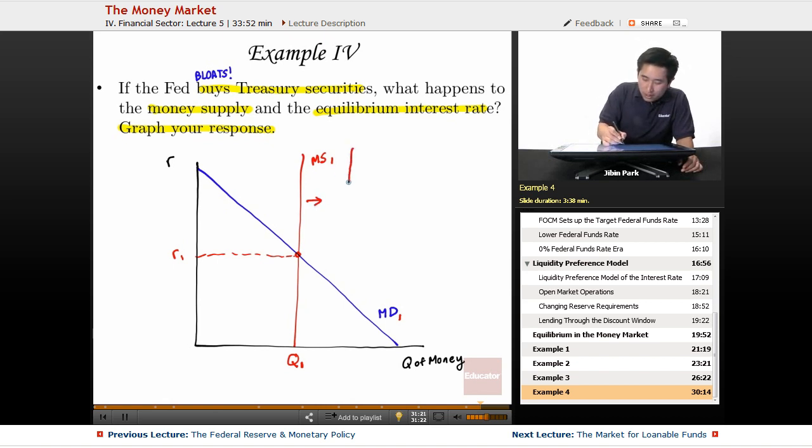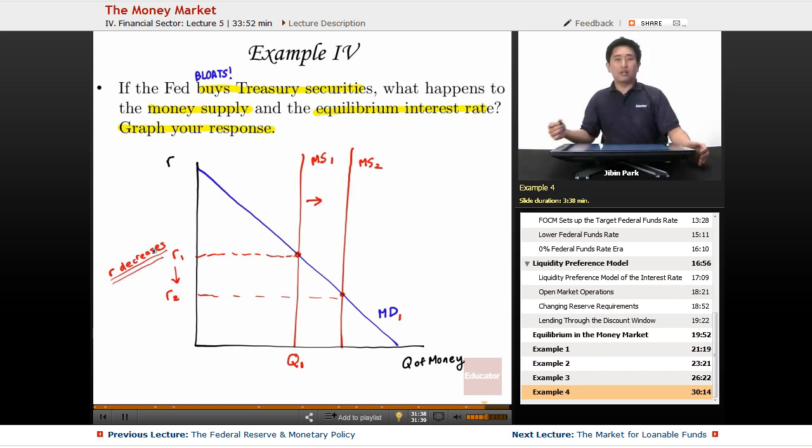So the money supply is going to shift to the right here. This vertical line, you're going to shift it to MS2 here, and you're going to have the interest rates go down from r1 to r2. So r decreases.